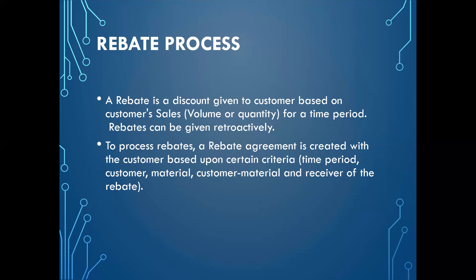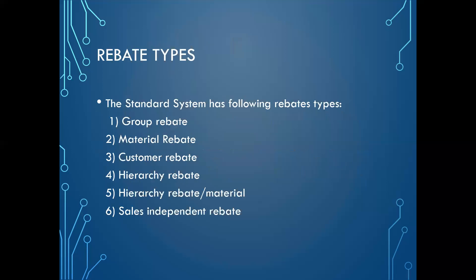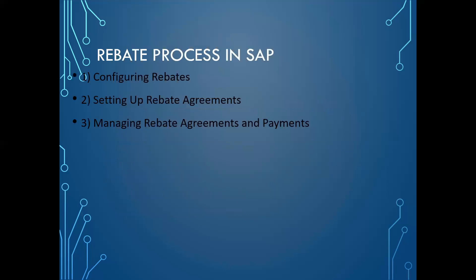Let's look at the types of rebates available. In the SAP standard system there are the following rebate types: group rebate, material rebate, customer rebate, hierarchy rebate, and material/sales-independent rebate. We will understand sales-dependent and sales-independent rebates with examples.